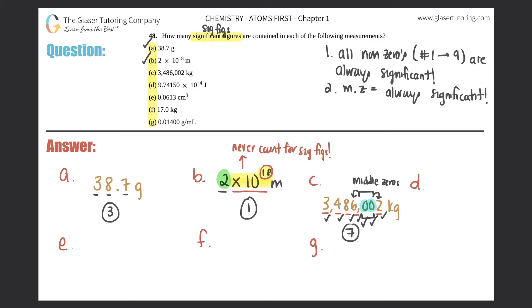Moving on to d: 9.74150×10^-4 joules. Like we just said, the times 10 to the business doesn't count, so you can get rid of it. All non-zeros are significant, so this one counts, this one, this one, this one, and this one—we have at least five. Now we got to worry about this zero. Would this be in the middle, the end, or the beginning? Remember, this part doesn't matter. This zero is at the end, and we specifically call those trailing zeros—like the ones that trail behind the leaders.